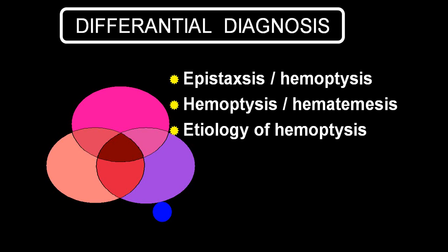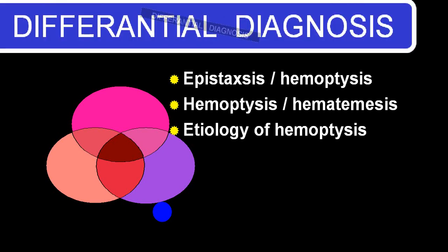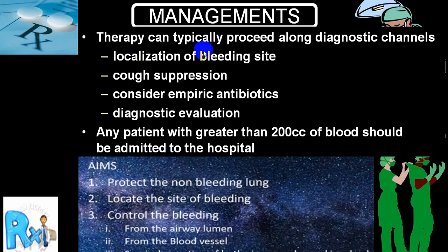Differential diagnosis includes epistaxis, haematemesis, and bleeding from the oral cavity. As far as management is concerned, the most important step is localization of the bleeding site. Suppress cough, consider empiric antibiotics if infection is suspected, and investigate to find the accurate diagnosis. If bleeding is more than 150 ml, the person must be hospitalized, the non-bleeding lung protected, the site of bleeding located, and bleeding controlled from the airway lumen, from blood vessels, or by surgical resection of both airway and blood vessels.